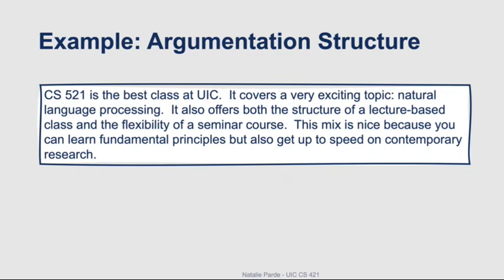If you are a grad student and you've enjoyed CS 421, you may want to sign up for CS 521. We have the text: CS 521 is the best class at UIC. It covers a very exciting topic, natural language processing. It also offers both the structure of a lecture-based class and the flexibility of a seminar course. This mix is nice because you can learn fundamental principles, but also get up to speed on contemporary research.